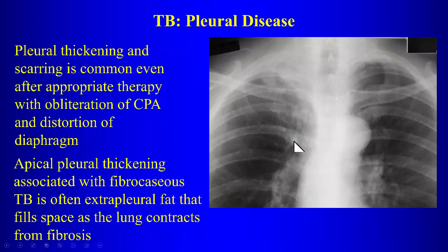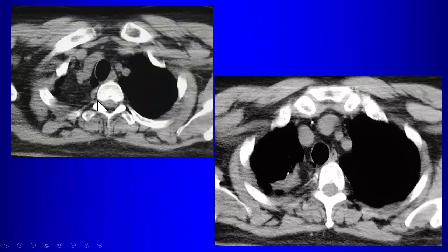Apical pleural thickening is very common with tuberculosis. It can also affect the costophrenic angles. In many cases, what looks like pleural thickening is actually extra-pleural fat filling the space created when the upper lobe contracts down from fibrosis. The extra-pleural fat comes in to fill the space, giving the appearance of apical pleural thickening on the chest radiograph.